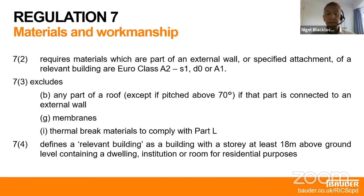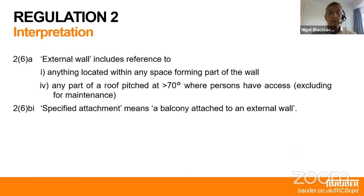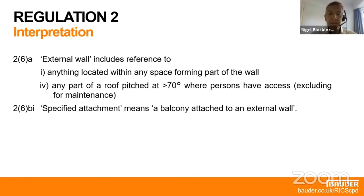A relevant building is defined, and this applied to buildings above 18 metres, although that's likely to change to 11 metres — certainly in Scotland it already is. Regulation 2 defines more closely what an external wall is, indicating anything located in the wall and also any part of a roof pitched at greater than 70 degrees. There's also a new term, specified attachment, which for our purposes principally refers to a balcony attached to a wall.